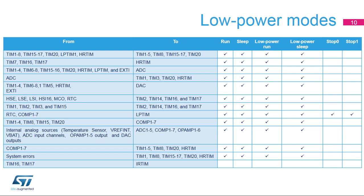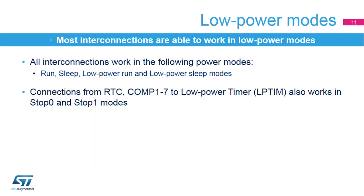Peripherals can be interconnected using the interconnect matrix even when the circuit is in a low power mode. This table indicates in which low power modes the interconnection between peripherals remains active. The low power modes that can be used are run, sleep, and low power sleep modes for all interconnections. The connections from the real time clock or comparators to low power timers can also be used in stop 0 and stop 1 modes.